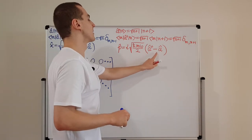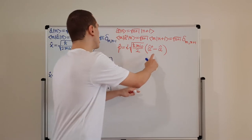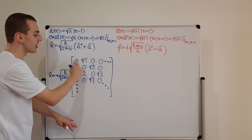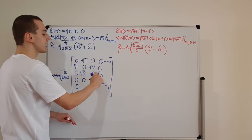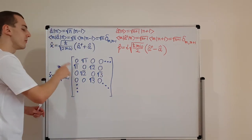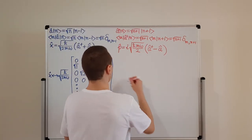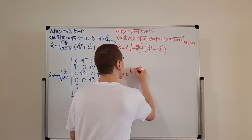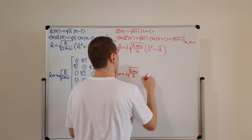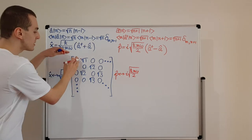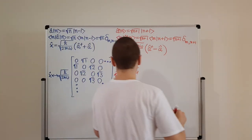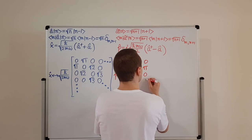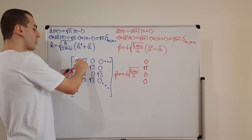What happens when we take the difference instead? For the momentum matrix, we assign a minus sign to all elements that came from A — the upper off-diagonal — while A-dagger's contribution remains unchanged. So the lower off-diagonal remains positive, but the upper off-diagonal gets minus signs. We also have a different coefficient at the front: the imaginary factor i√(ℏmω/2).